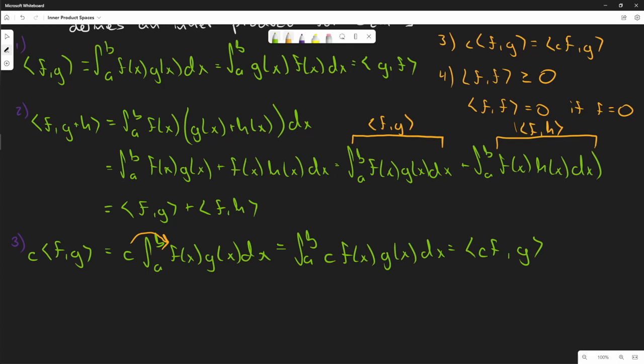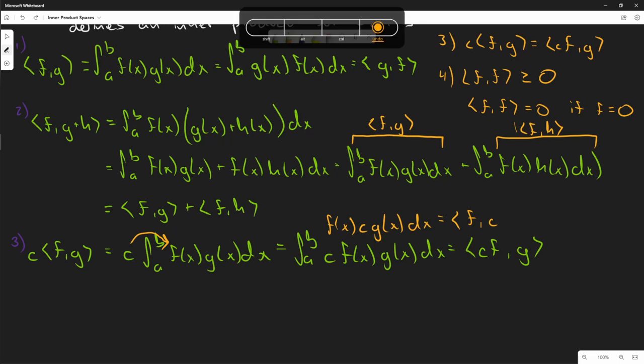Alternatively, we can write the integral of f(x)·cg(x) dx, which would be <f,cg>. They're both the same because multiplication is commutative here, so the third axiom is satisfied.